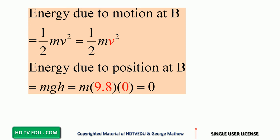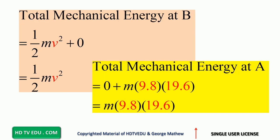At point B, the object is in motion so the speed is not zero — we have one-half mv squared for kinetic energy. As for energy due to position at B, it is mgh, but we established the zero level at point B, so the height is zero. Therefore energy due to position at B is zero.